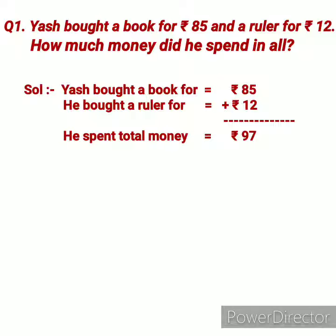In this question we need to find out the total money. The solution: Jas bought a book for rupees 85, which is given in the question. He bought a ruler for rupees 12, which is also given in the question. Now we need to calculate the total money. As we know, to find out total money we add the amounts.